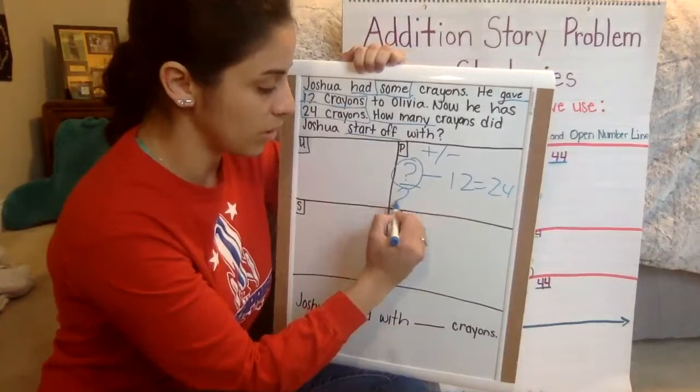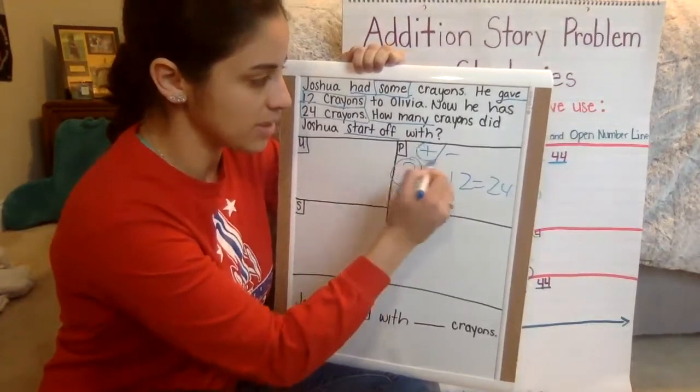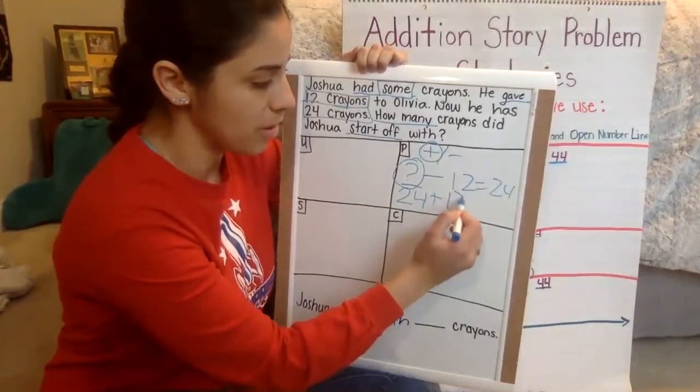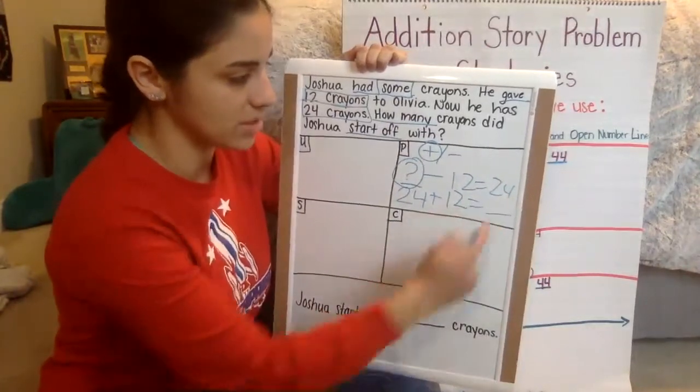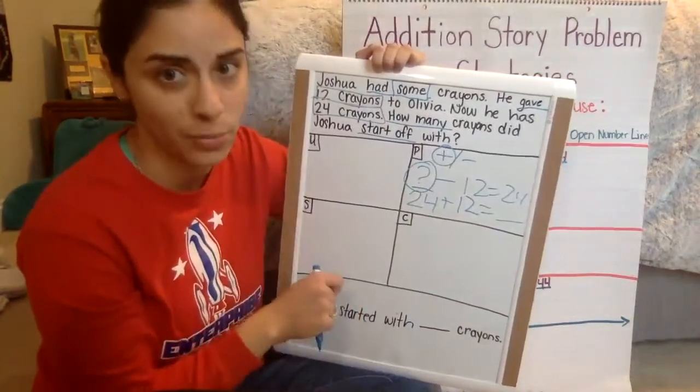So if you remember how to do that, we're going to do 24, flip the sign to a plus. So it's going to be an addition problem plus 12 equals blank. So we just flipped these two places and we made the minus sign an addition problem instead.